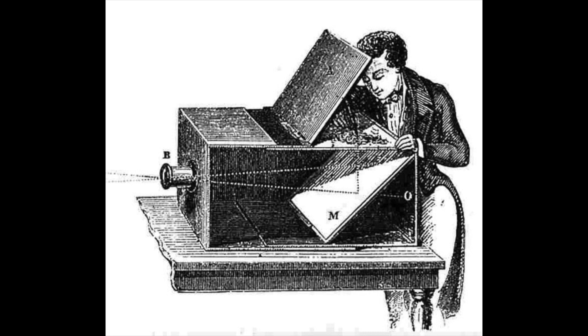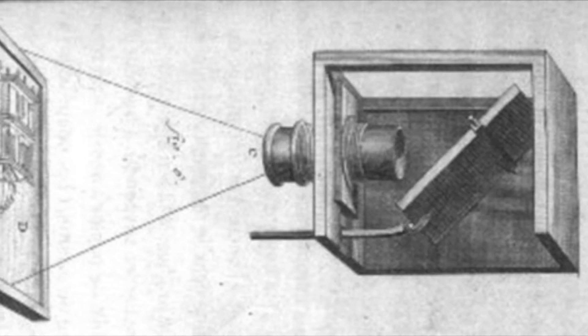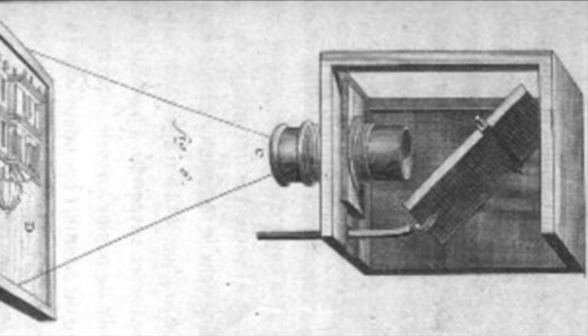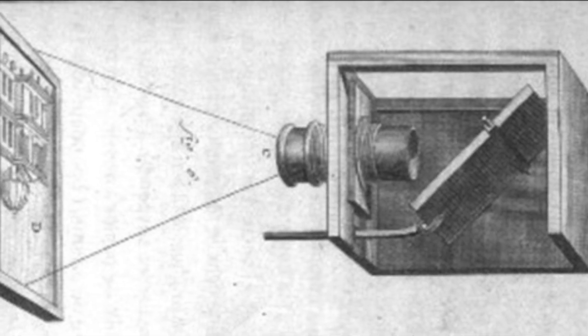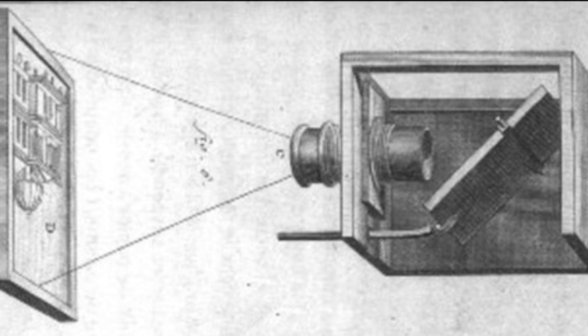It was not until 300 years later when Johann Hendricks Schultz discovered that an image would be preserved for a little when exposed to a silver compound when light changed the appearance.